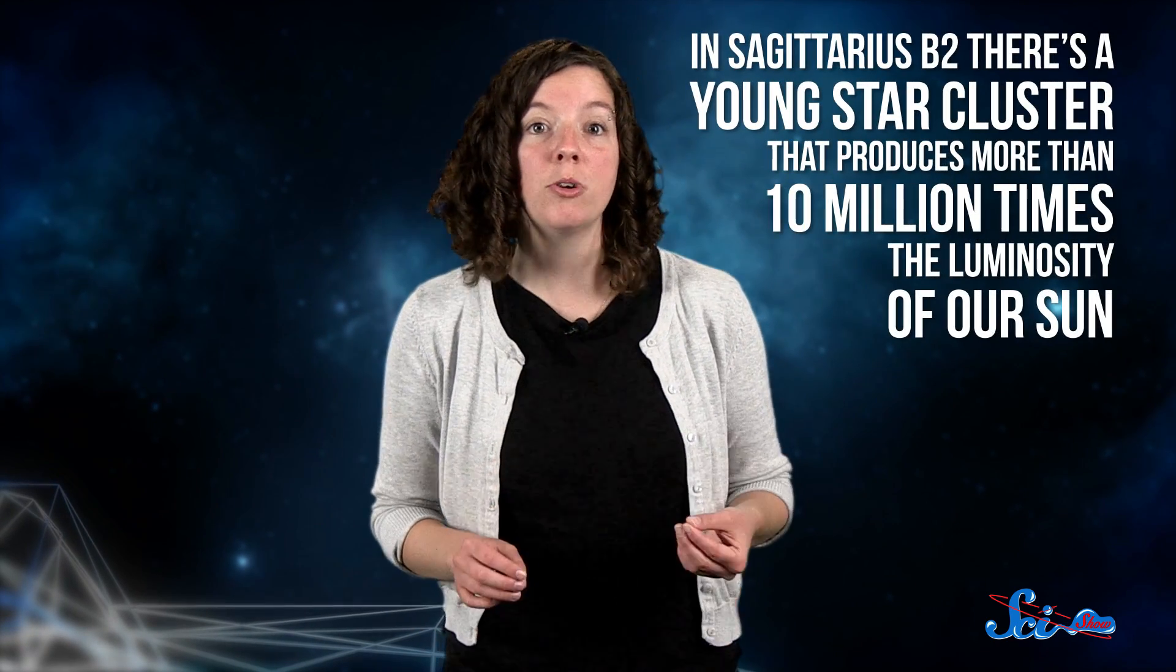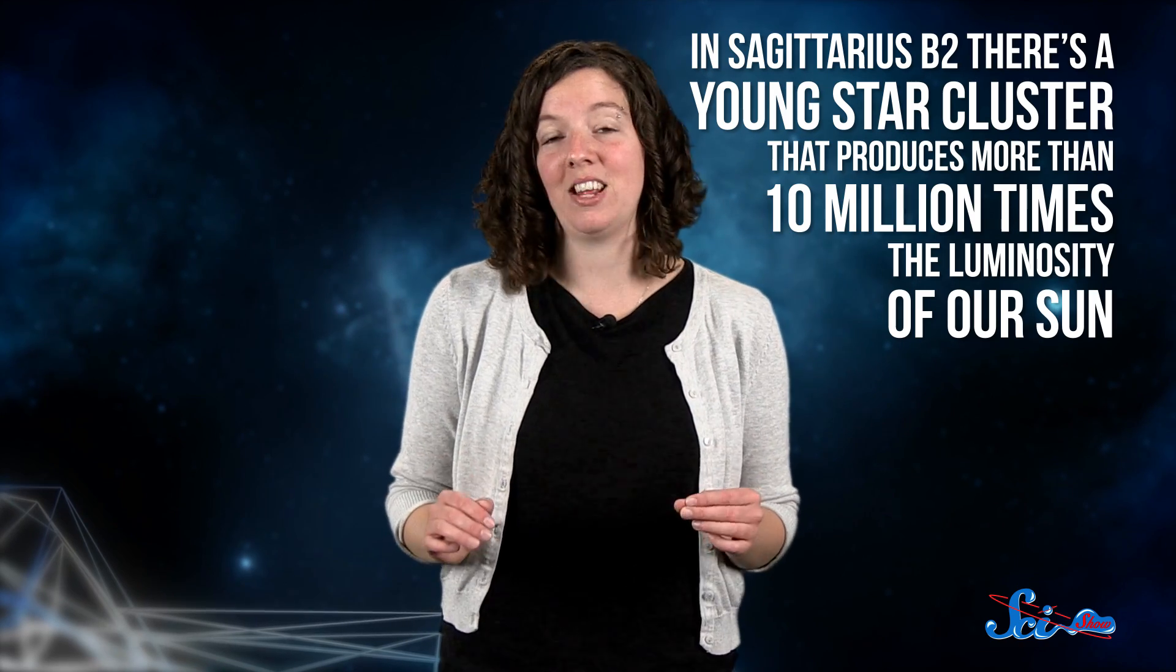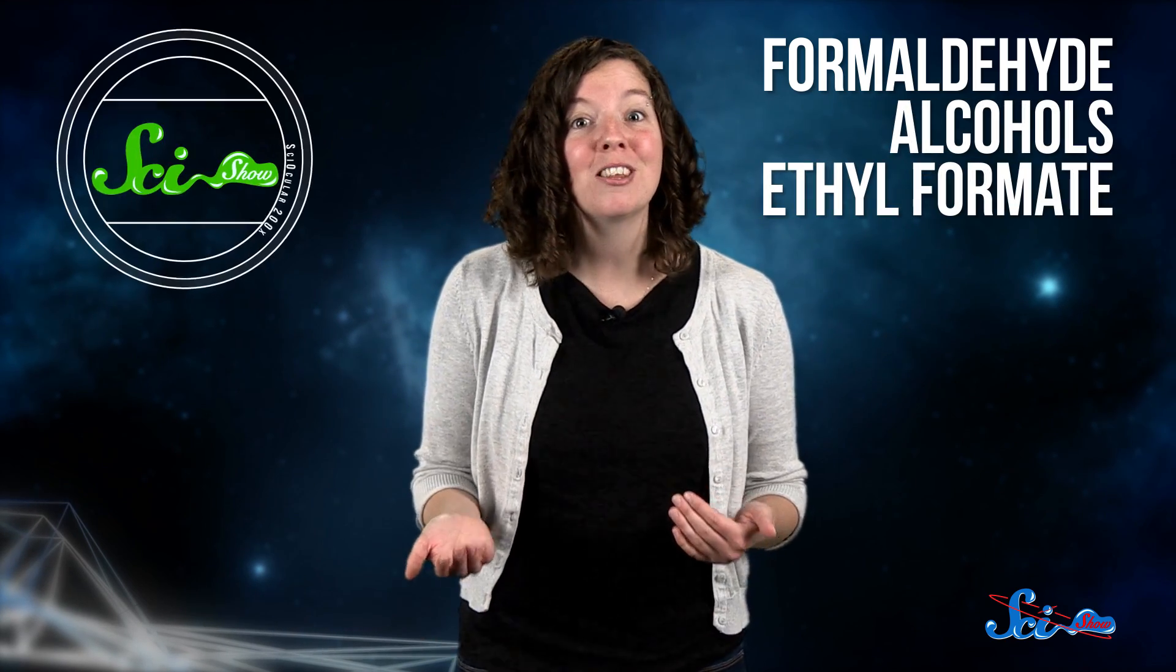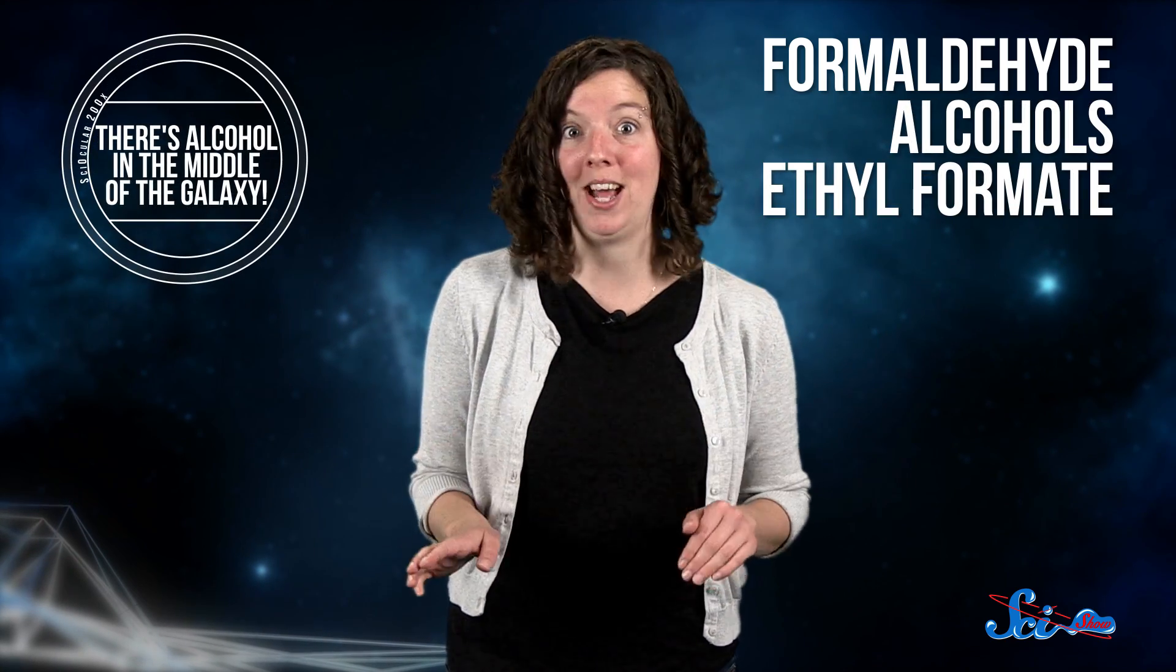And in the hottest spot in Sagittarius B2, there's a young star cluster that produces more than 10 million times the luminosity of our Sun. These hot stars pour out so much heat and energy that all sorts of complex chemical reactions can happen in the surrounding clouds. So that's where we tend to find complex organic molecules like formaldehyde, different kinds of alcohols, and ethyl formate, a molecule that smells like rum and tastes like raspberries.